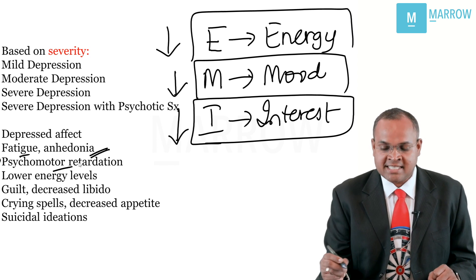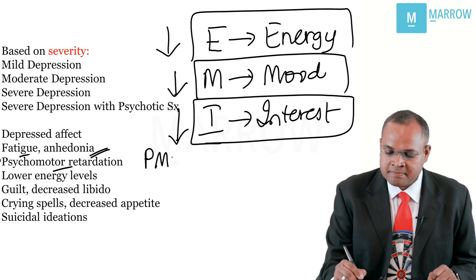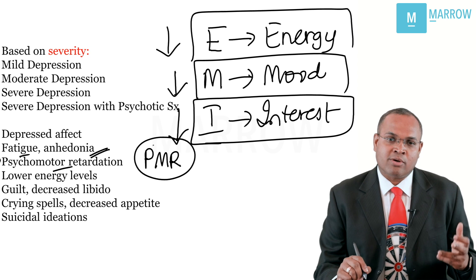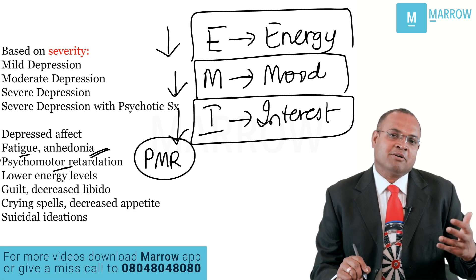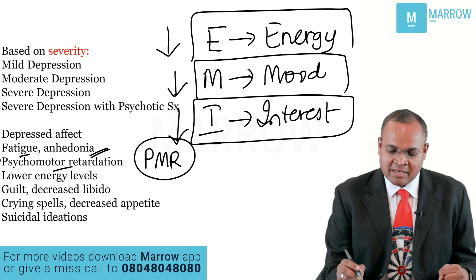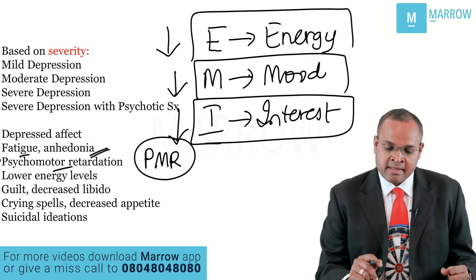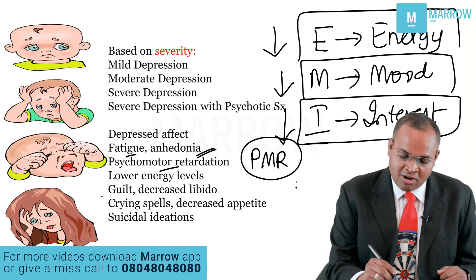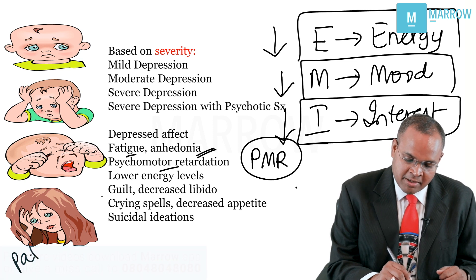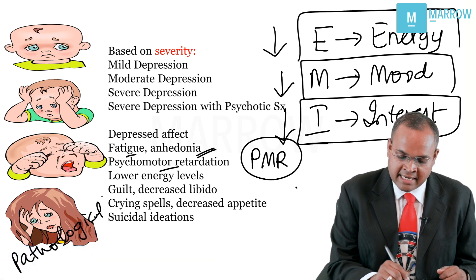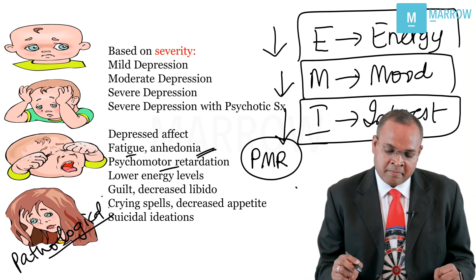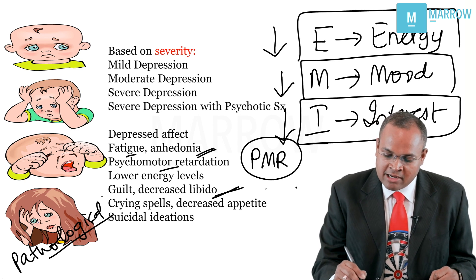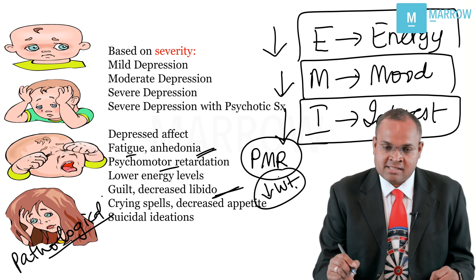The clinical syndrome doesn't only restrict to these core features — it can lead to fatigue, and psychomotor retardation, which basically means the person becomes slow in their walking, talking, and thinking. If you ask them a question they take a lot of time to answer. Guilt can happen, sometimes to the extent of pathological guilt. Crying spells, decreased libido, decreased appetite, and weight loss can also occur.